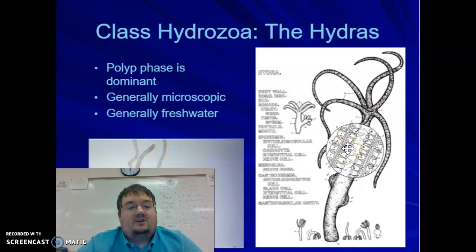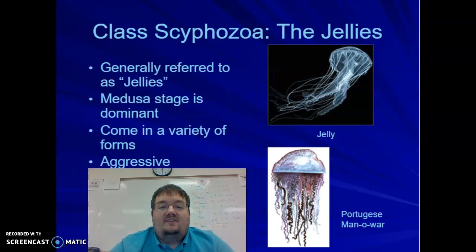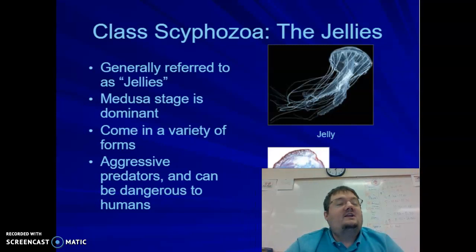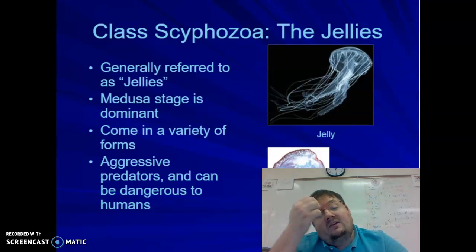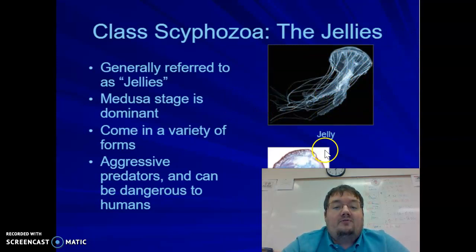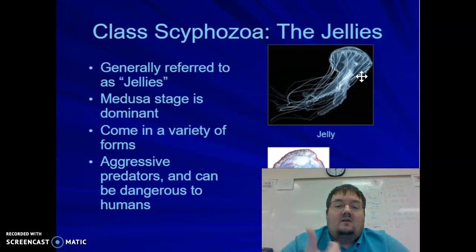Scyphozoa is nicknamed the jellies, because this group represents the vast majority of cnidaria — all the different species of jellyfish. This grouping is very successful. In Scyphozoa, the medusa stage is dominant, so these are free-floating or free-moving organisms swimming in the ocean. They come in a vast variety of forms, but something they have in common is that they're all very aggressive predators and can be dangerous to humans. Don't mess with jellyfish.